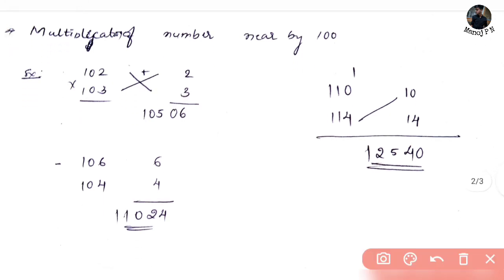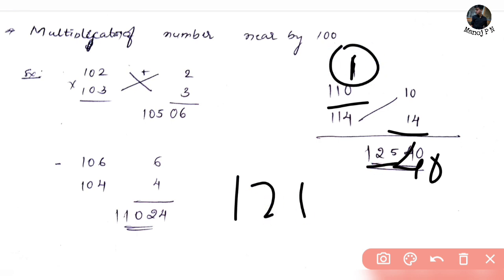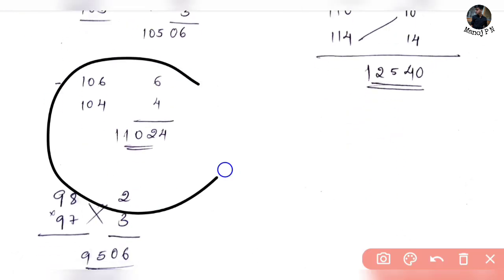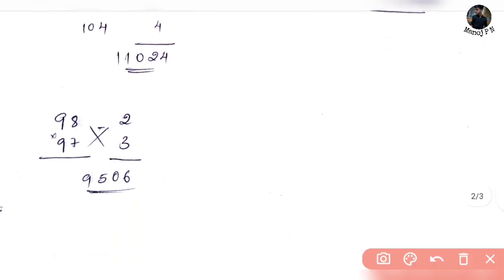It's the same with 110 times 114. The excess from 100 is 10 and 14. 10 plus 14 is 140, but we keep the last two digits, so 40 carries. 110 plus 14 is 124, and we add the carry to get 125. And 10 times 14 is 140, so the answer is 12,540. Then for numbers below 100 like 98: the deficit from 100 is 2.